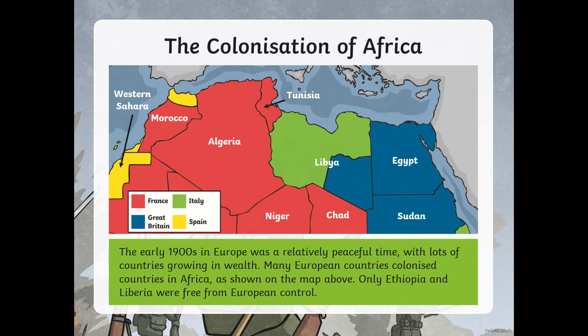The red areas were colonised by France — for example, Algeria and Chad. The green areas were colonised by Italy — for example, Libya. The blue areas were colonised by Great Britain — for example, Egypt. And the yellow areas were colonised by Spain — for example, the Western Sahara. Only Ethiopia and Liberia were free from European control.